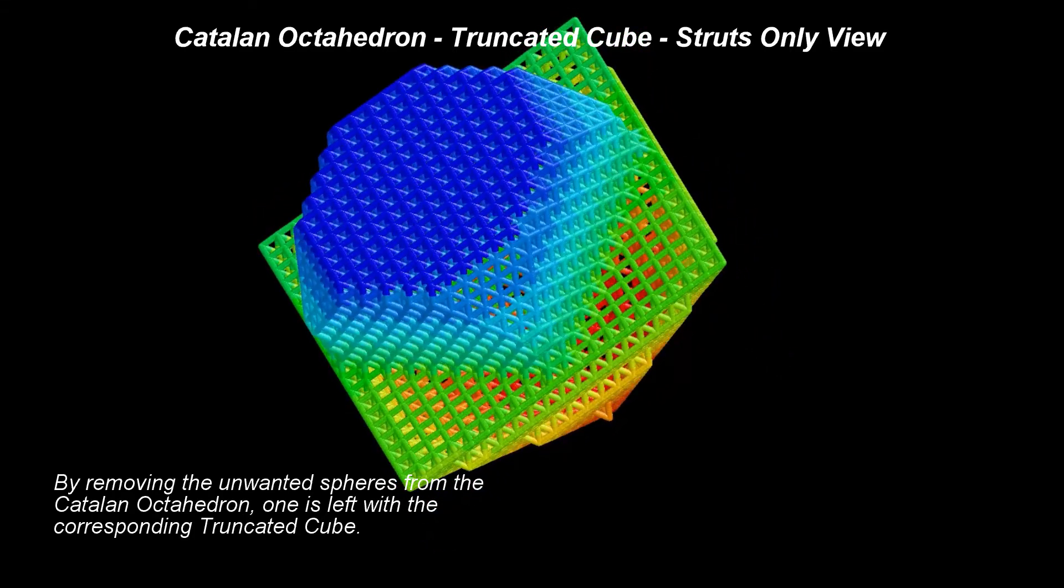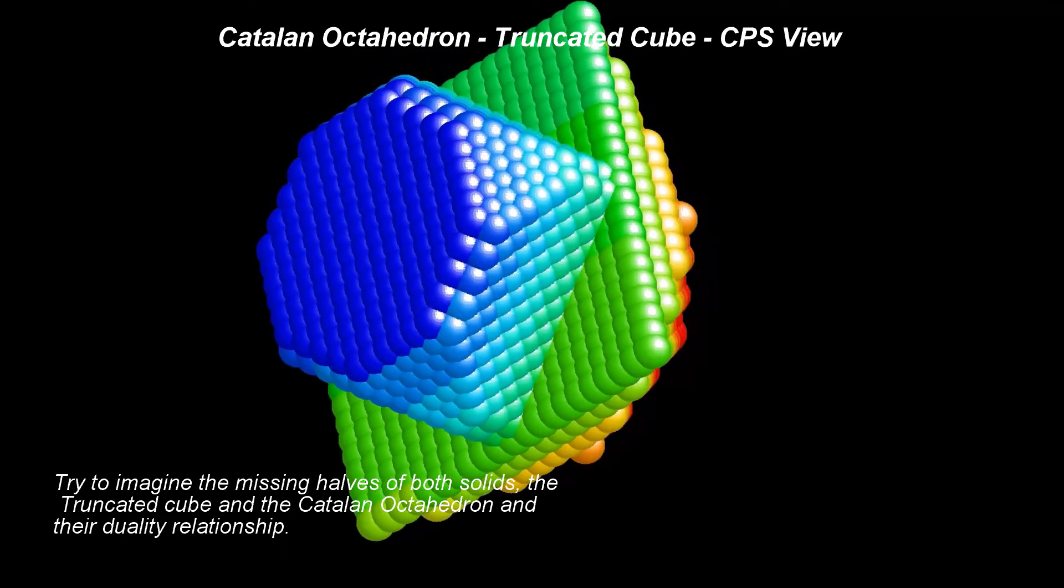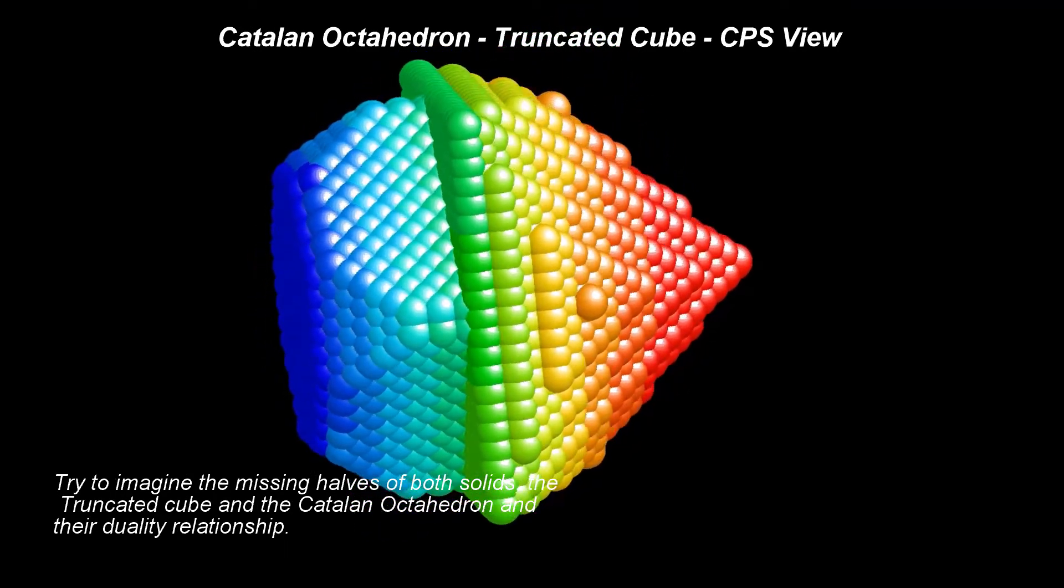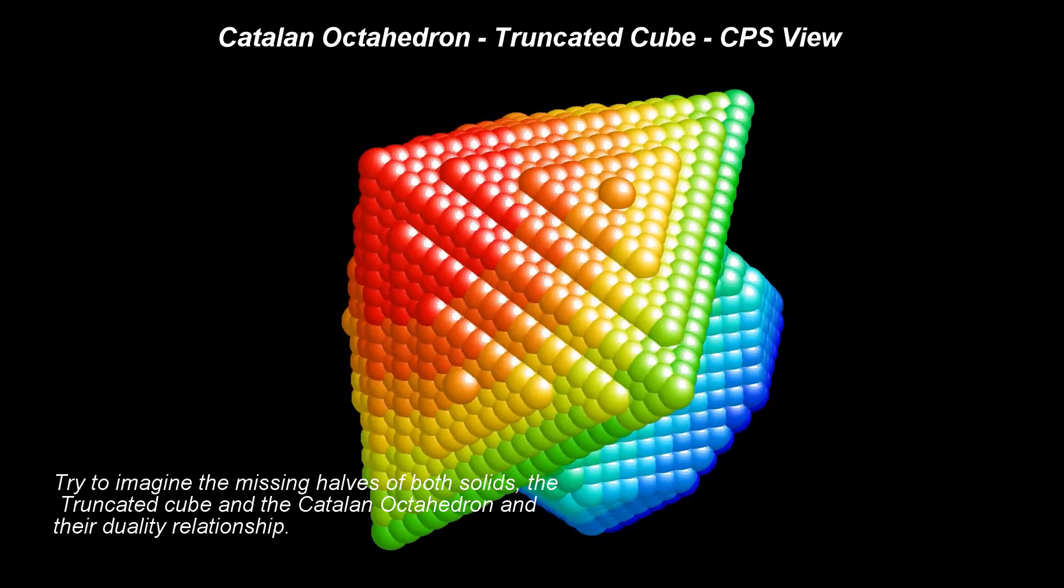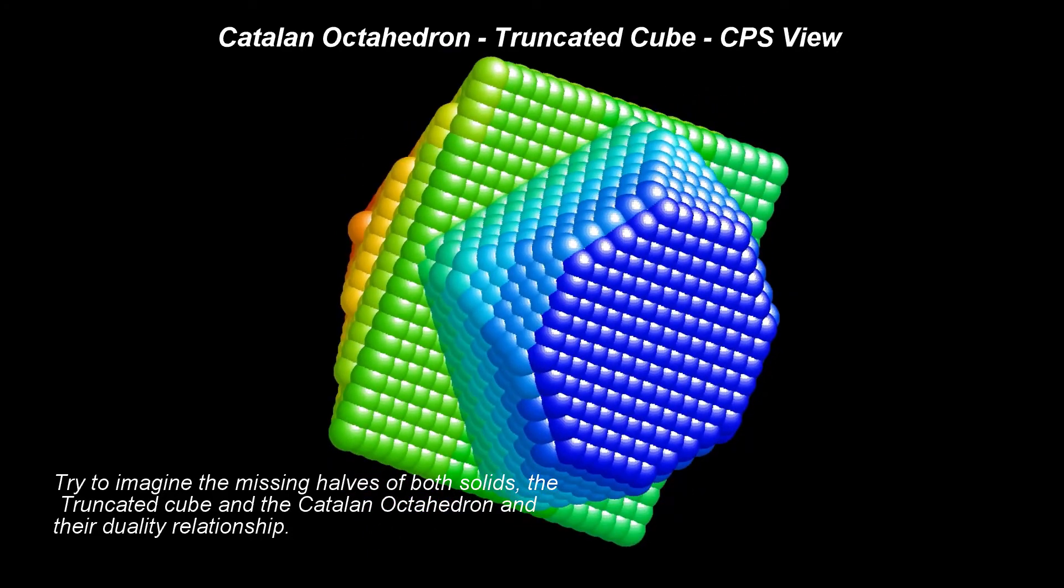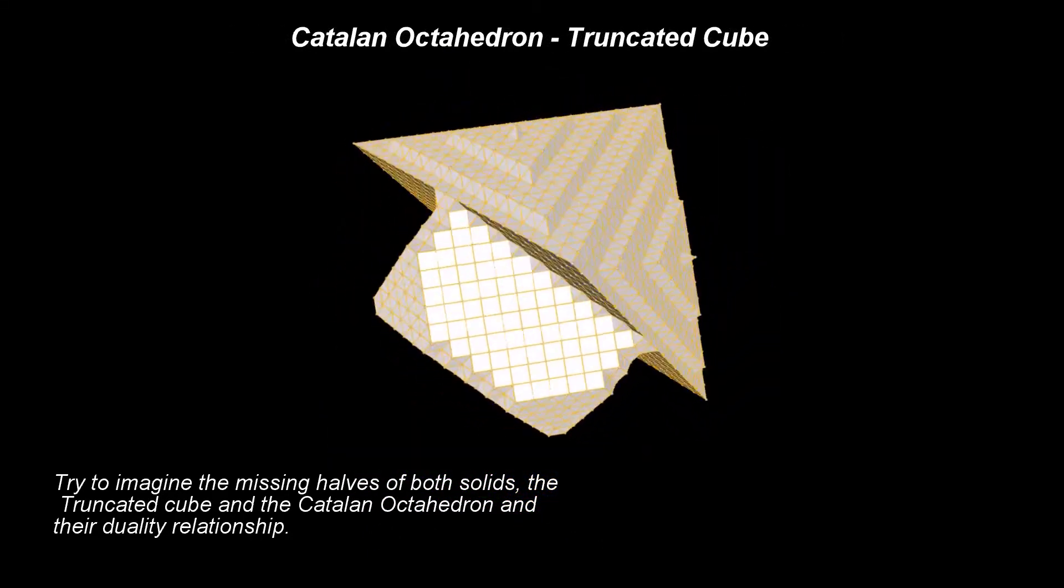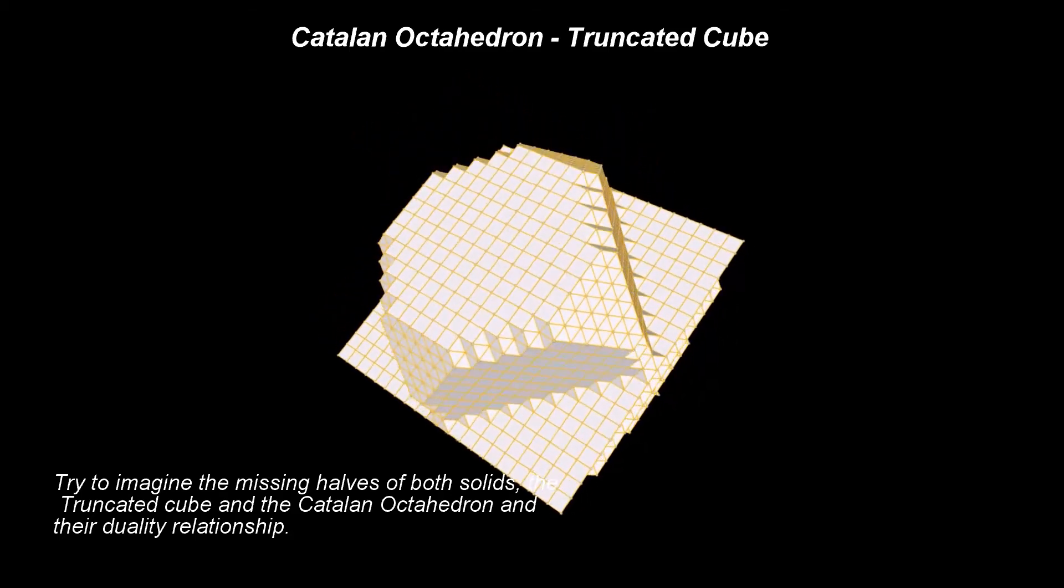We have chosen to show the duality of Catalan octahedron and truncated cube using a handful of views. Try to imagine the missing halves of both solids, the truncated cube and the Catalan octahedron, and their dual relationship.